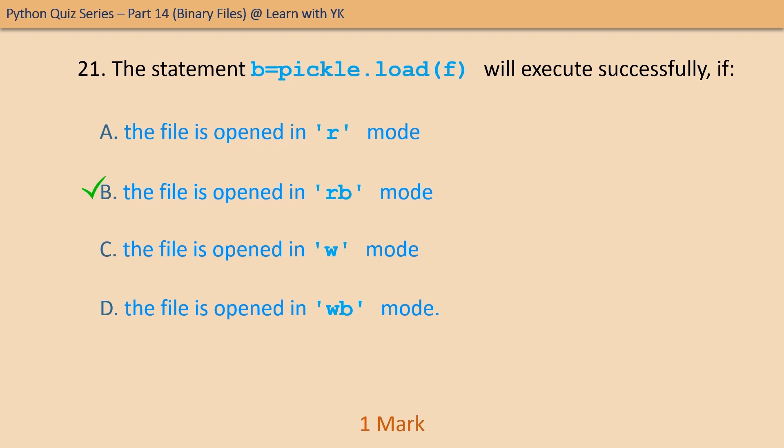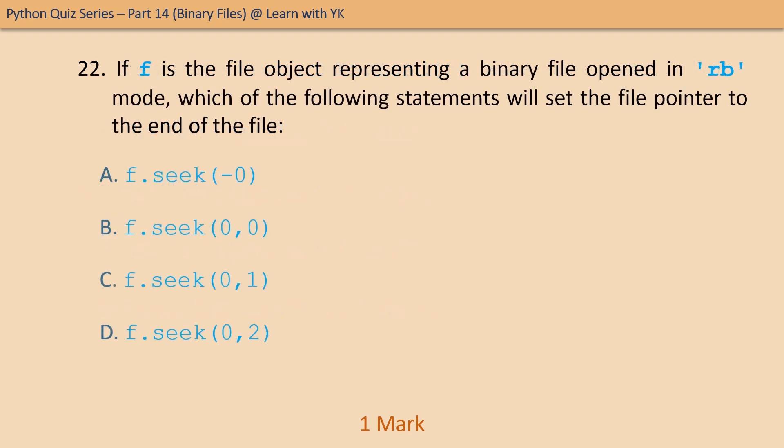Question number twenty-two: if f is the file object representing a binary file opened in rb mode, which of the following statements will set the file pointer to the end of the file? Pick the correct option. The correct option is option D.